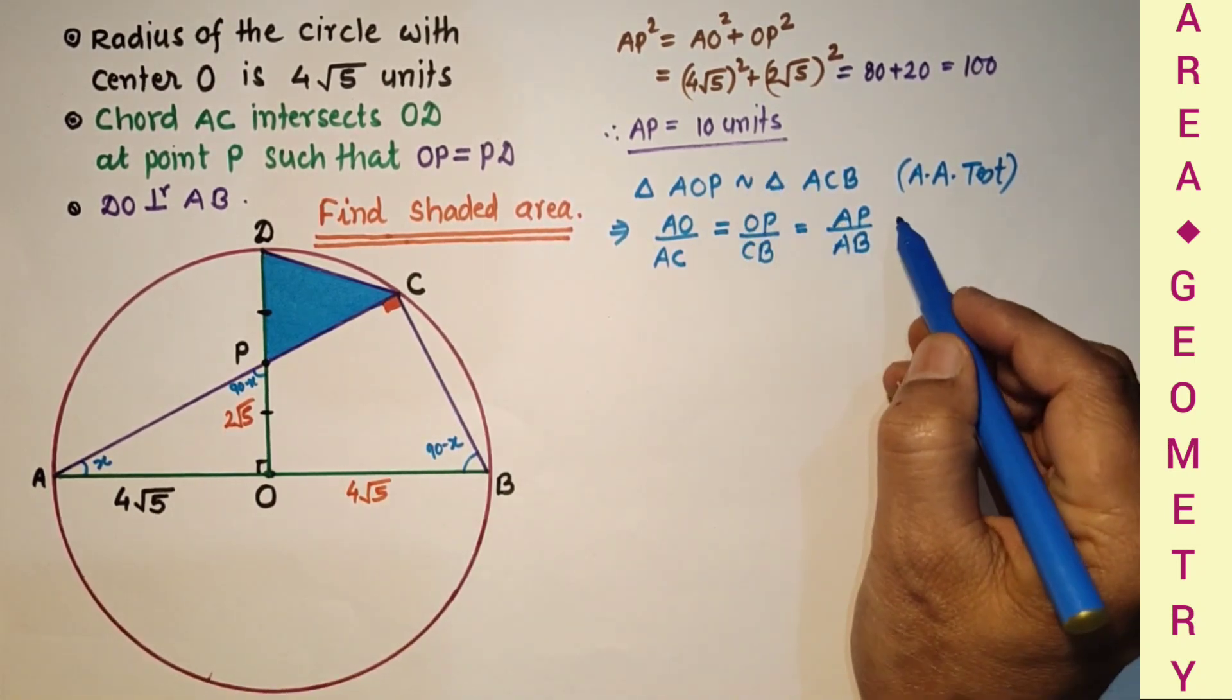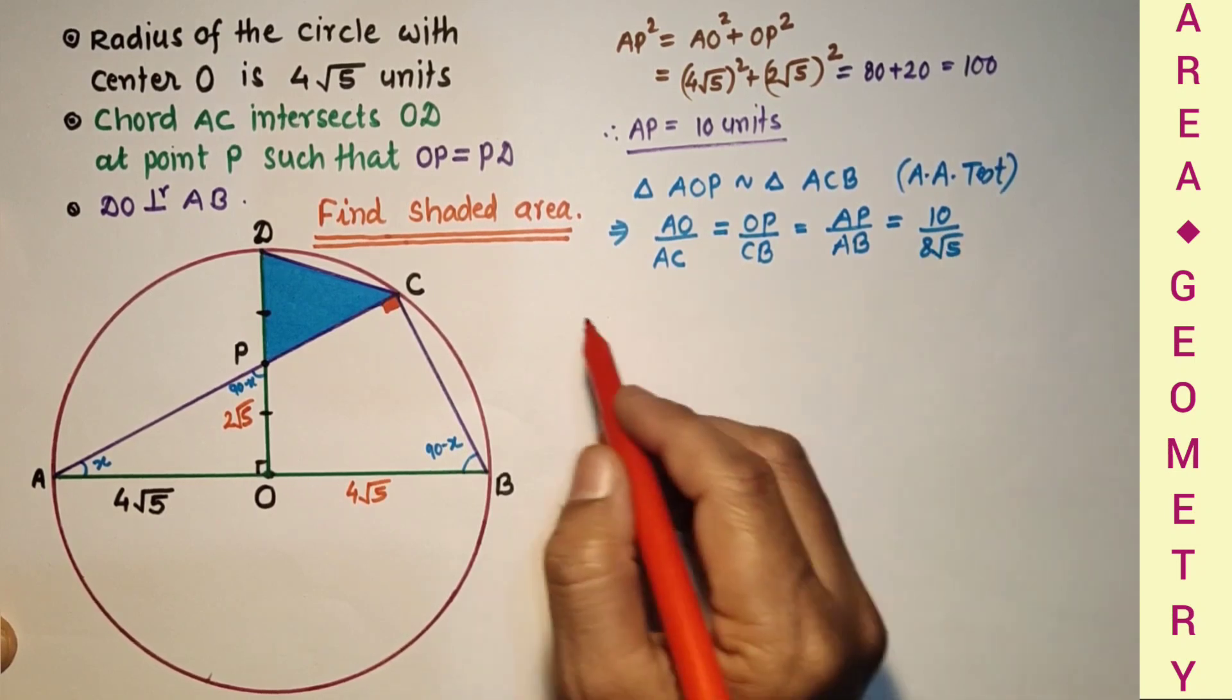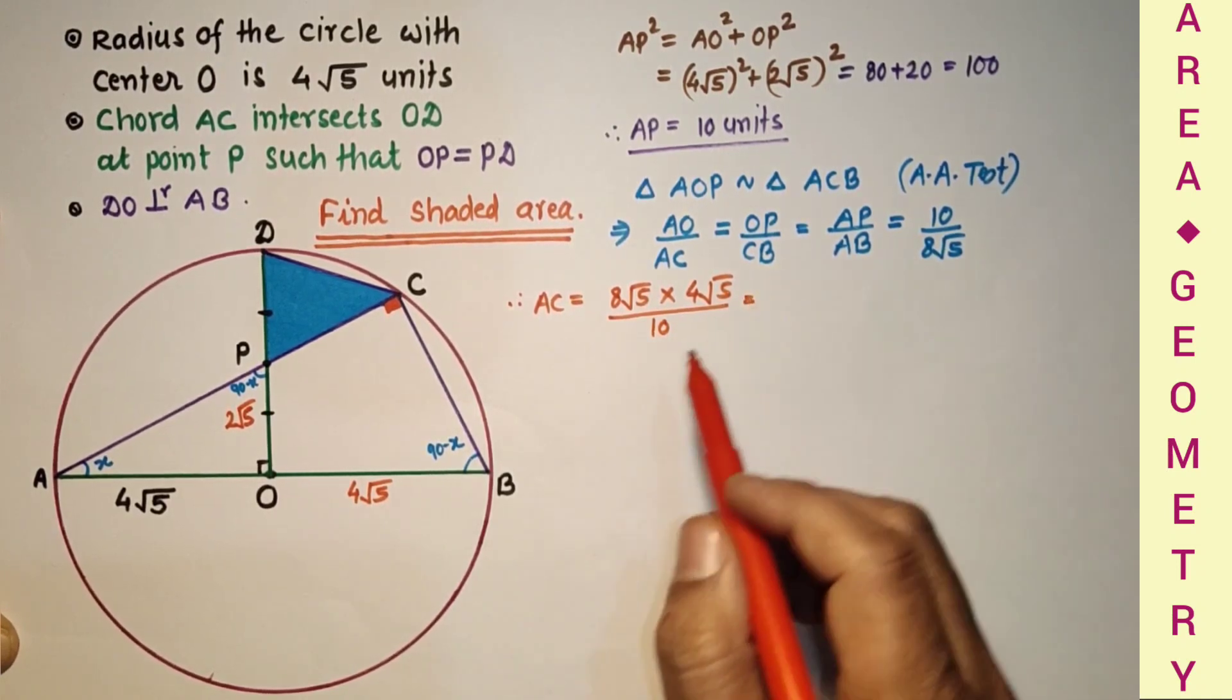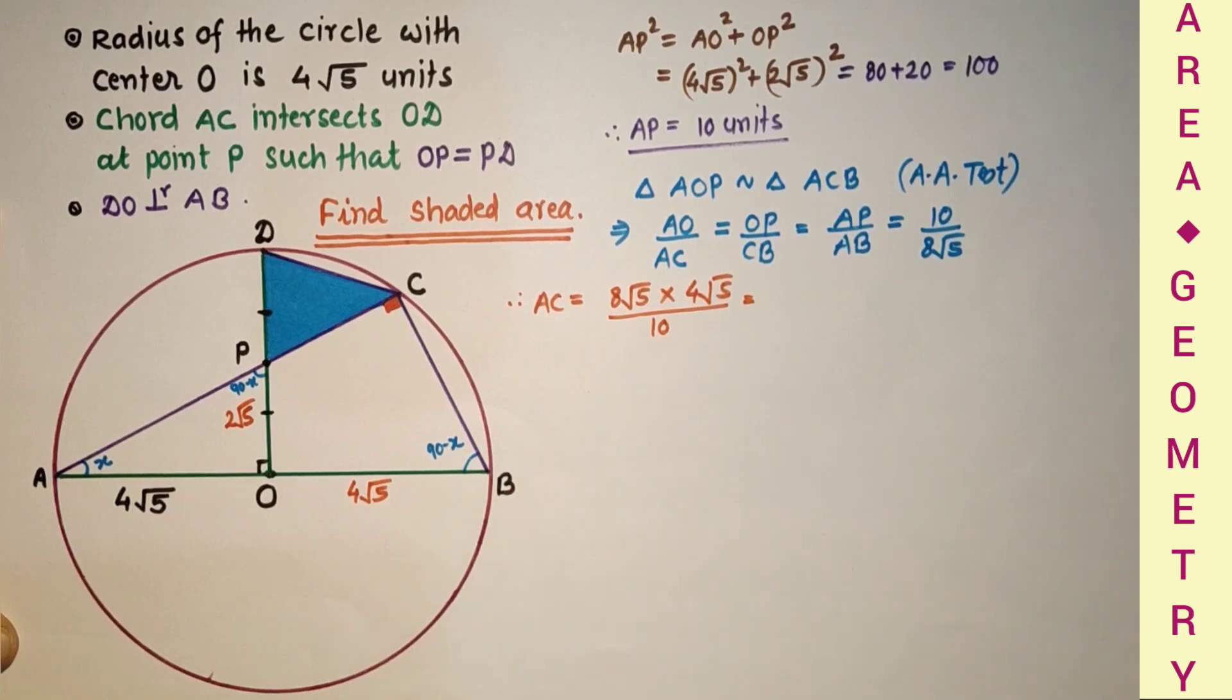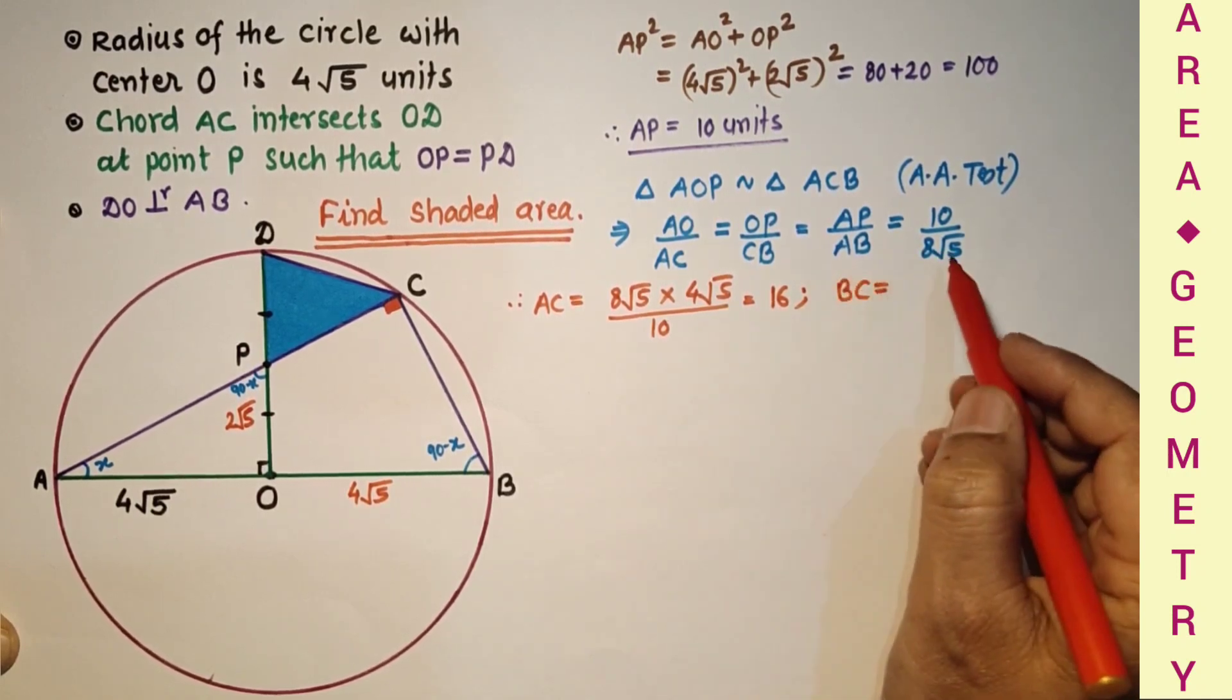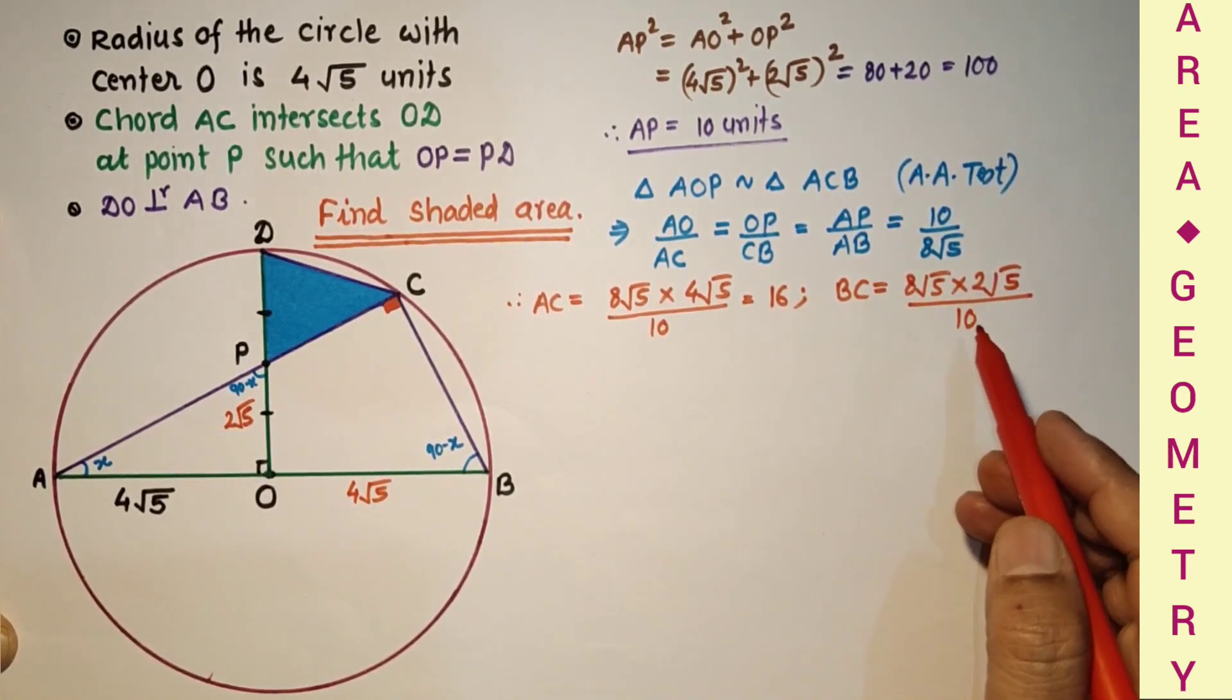AP we found as 10, 10 over AB is 8 root 5. So we can find AC. AC is equal to 8 root 5 into AO. AO is 4 root 5, upon 10. And 8 into 5 into 4, 32 into 5 by 10, which is coming 16 units. And we can find BC. So BC is equal to 8 root 5 into OP, OP is 2 root 5, upon this 10. So that is equal to 8 units.